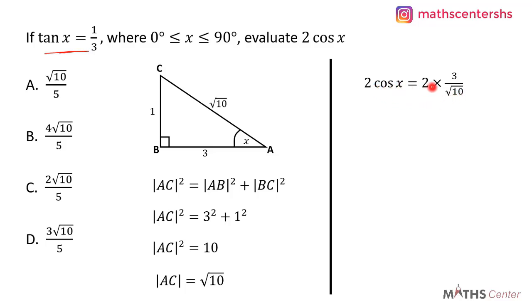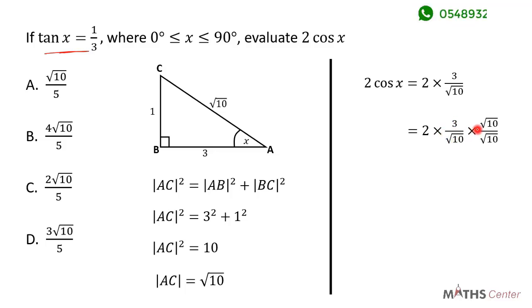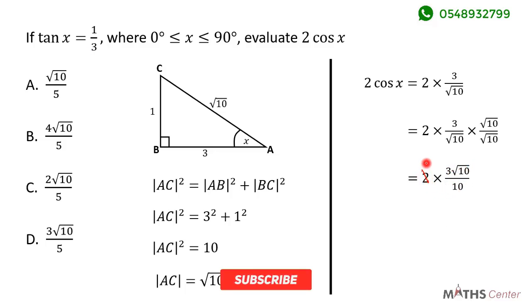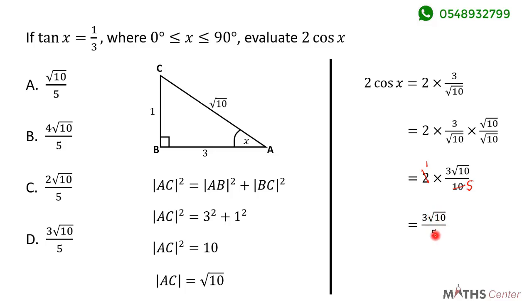So 2 cos x is equal to 2 times 3 divided by square root of 10. Let's rationalize this. To rationalize, we multiply both the numerator and the denominator by square root of 10. We get 2 times 3 times square root of 10 divided by 10, which gives us 6 root 10 divided by 10. Simplifying, 2 cancels with 10 to give 5, leaving us with 3 root 10 divided by 5.